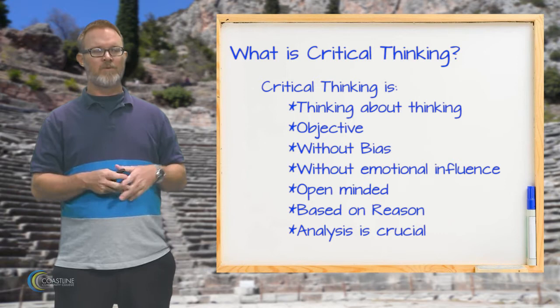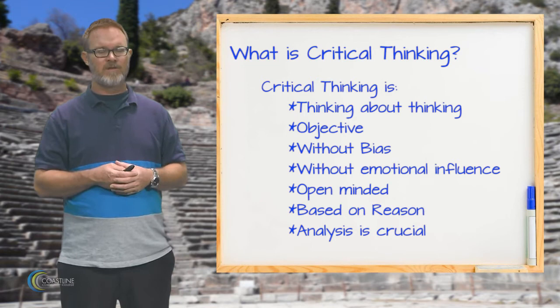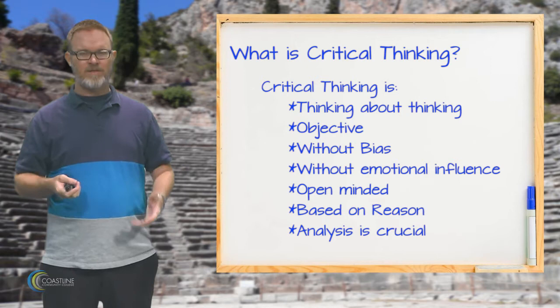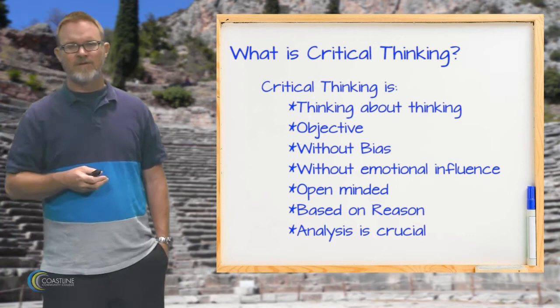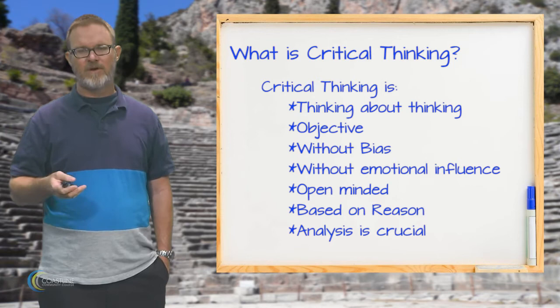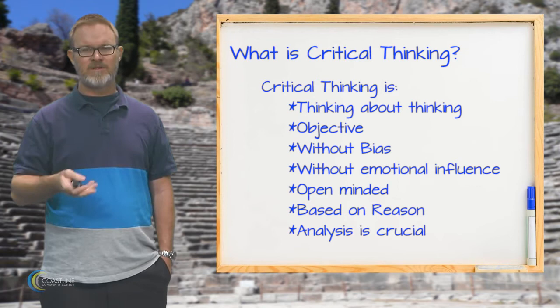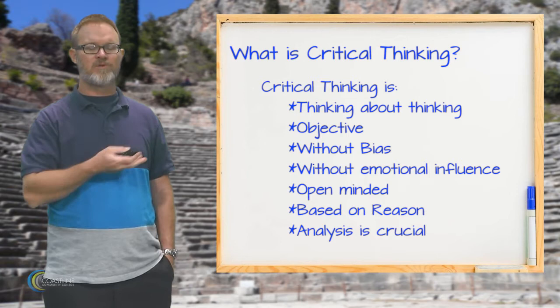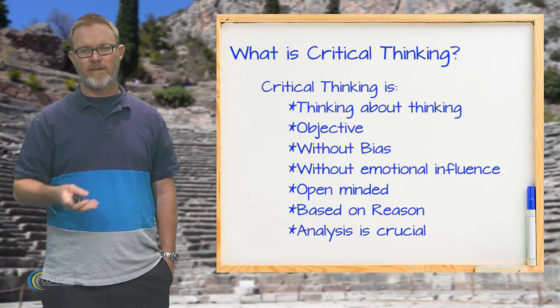To really understand critical thinking, we need to think about the idea of reason. A reason is essentially a piece of evidence or support in favor of something. When we develop a belief — when we come to believe something — we want it to be reasoned; we want good reasons and evidence supporting it. If we don't have that, we should discard it and find something we can back up with more evidence and support.